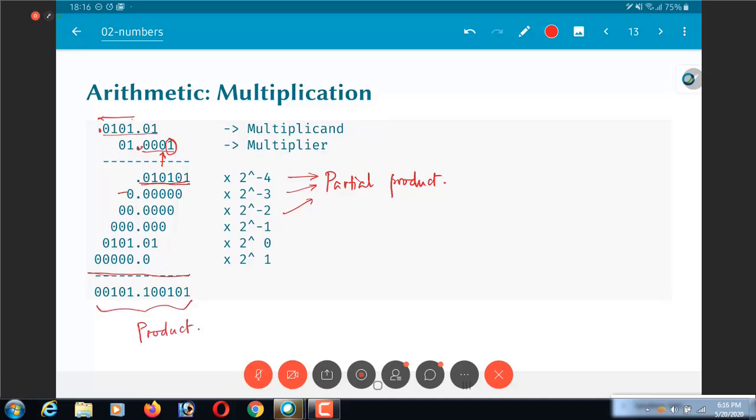Okay, so this is essentially how I would do multiplication. Once again almost identical to how you would do it in the case of integers, you just need to take care of what your scaling factors are.